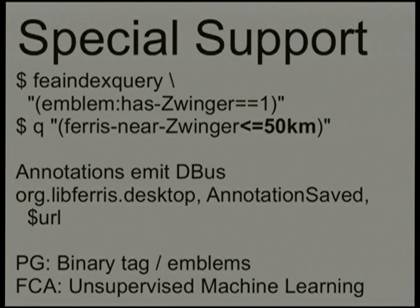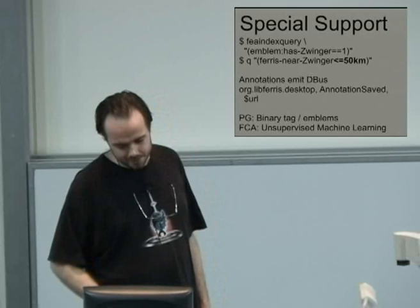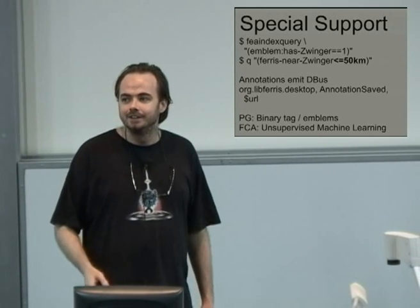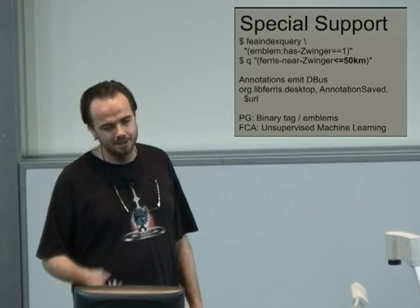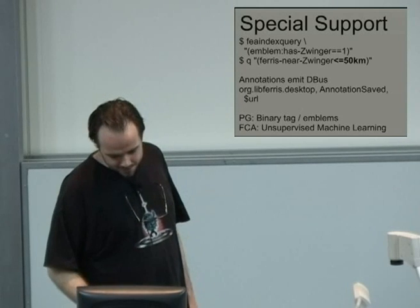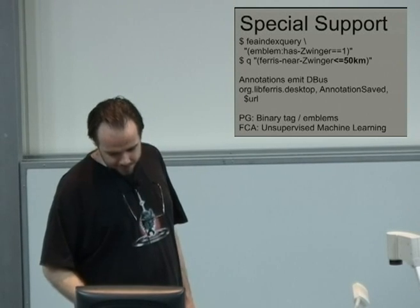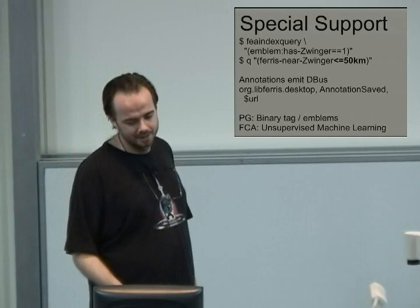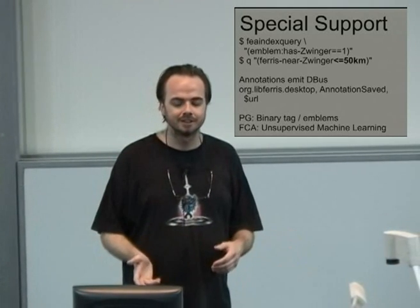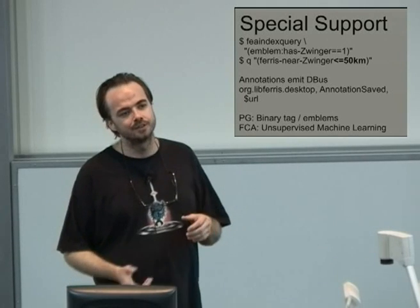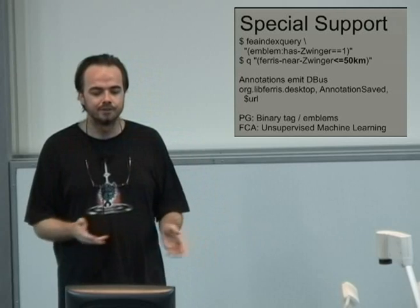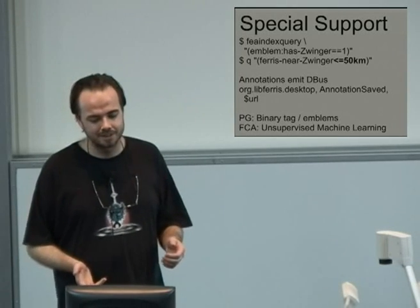There's special support in index and search for geotagging — if you have something tagged with a geospatial tag, you can say 'find me things tagged with other geospatial tags within 50 kilometers in a square box from this particular tag,' which is cool for bouncing around places in index and search. Whenever you modify an annotation for a file, a DBUS signal is emitted, so you can monitor that and immediately update your indexes when people make new annotations. Postgres has special support for binary tags — for geospatial tagging, using GiST indexes, if you're looking for something with two or three tags, the GiST stuff will make that search incredibly fast.